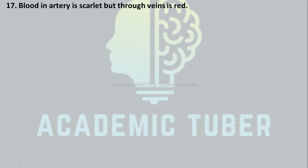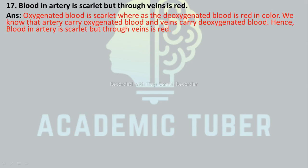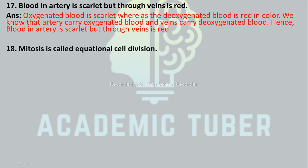Blood in arteries is scarlet but blood through veins is red. Why? Oxygenated blood is scarlet whereas deoxygenated blood is red in color. Arteries carry oxygenated blood and veins carry deoxygenated blood, hence blood in arteries is scarlet but blood through veins is red.